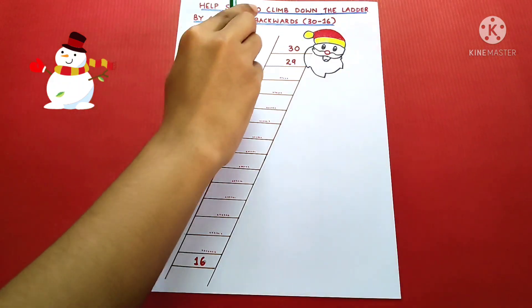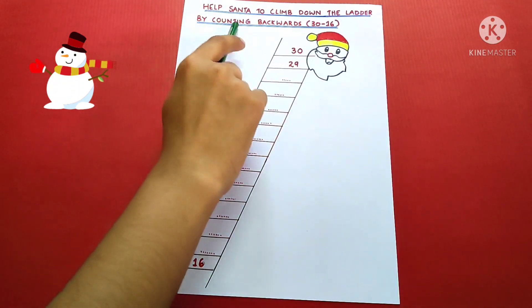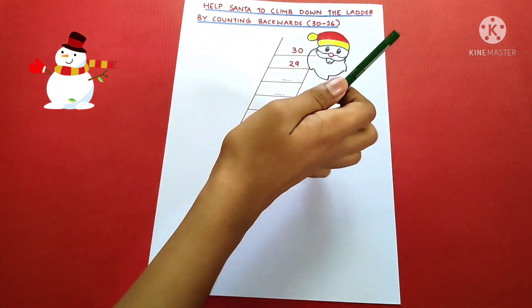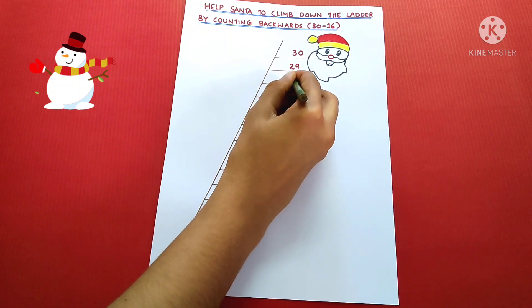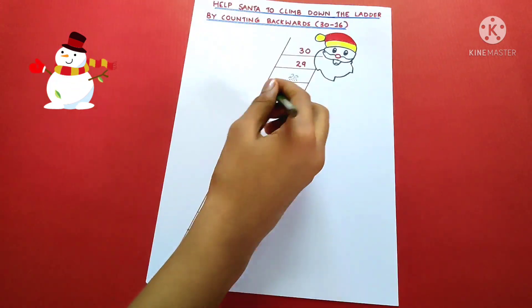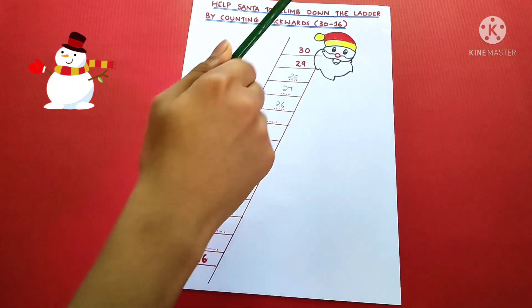Help Santa to climb down the ladder by counting backwards 30 to 16. 30, 29, 28, 27, 26, 25.